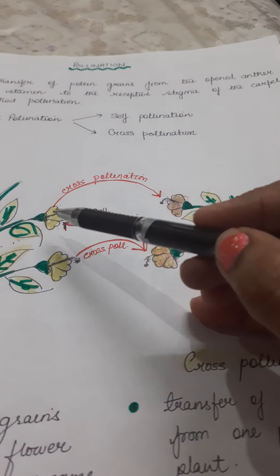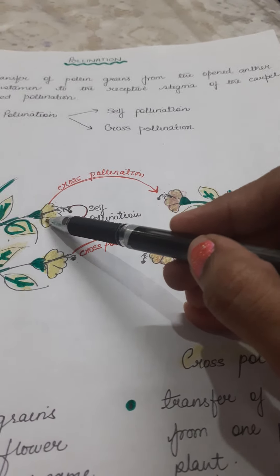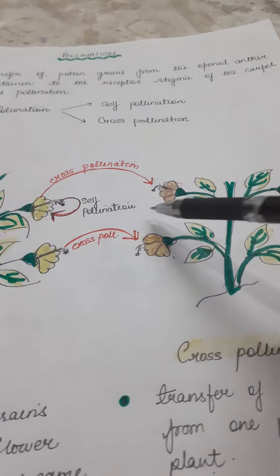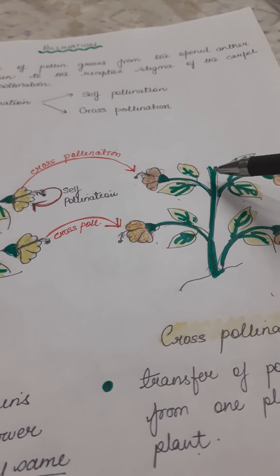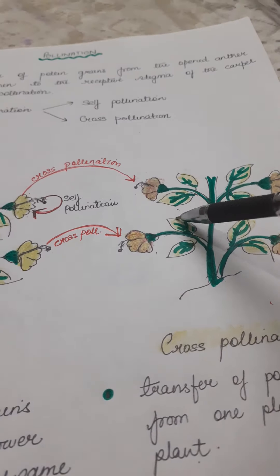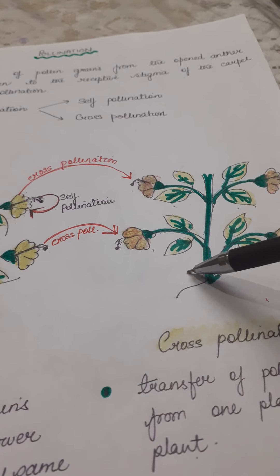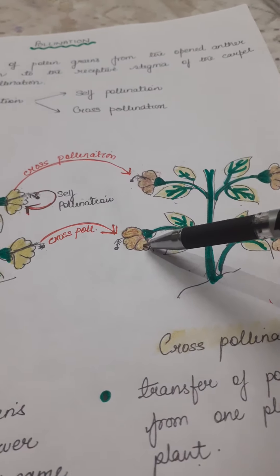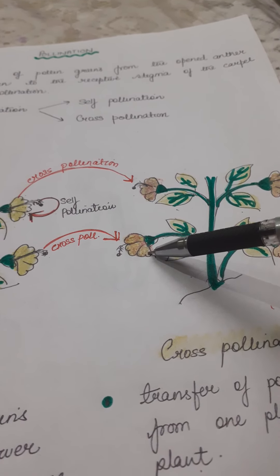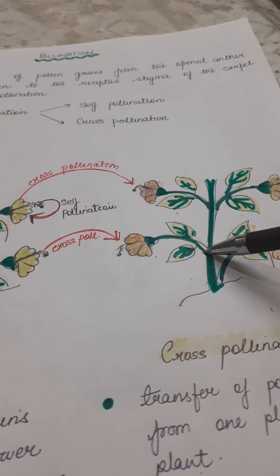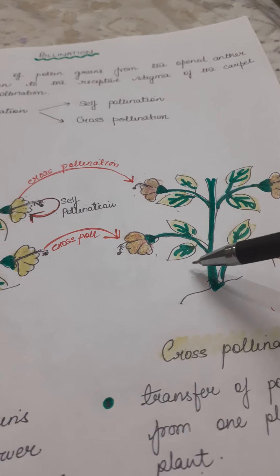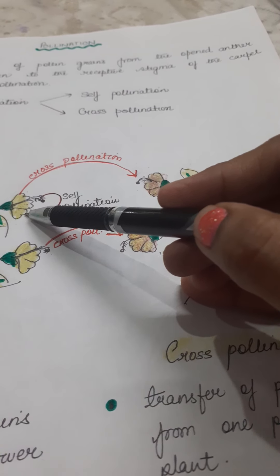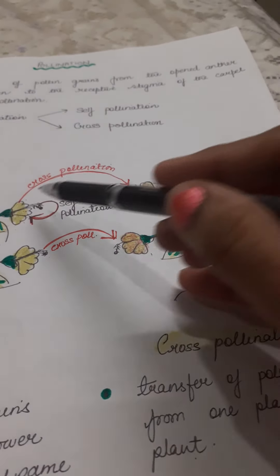Whereas if you are transferring the pollen grains from one plant to another, it is cross-pollination. That is, a flower born on one plant transfers pollen to a flower born on another plant of the same species — the species must be the same. There can be mild, minor variations between the two plants; to show that, I have changed the color of the flower slightly so you understand that variations can exist, but they should belong to the same species. When a flower from one plant transfers its pollen grains to the flower of another plant, that is known as cross-pollination.